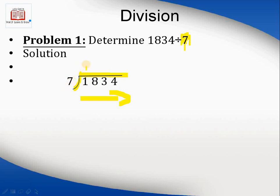Here you need a grip on multiplication tables. The first digit of the dividend must be greater than or equal to the divisor. For example, the first digit is 1, which is less than 7, so we need to combine it with the next digit to make 18. Now 18 is greater than 7, so we can continue the process.